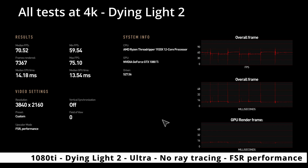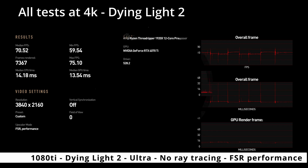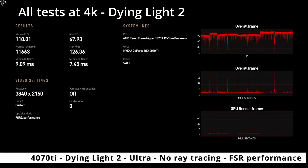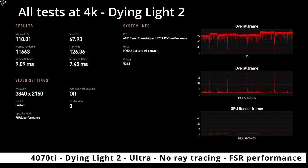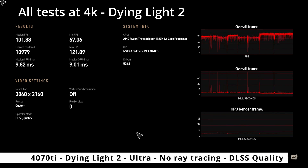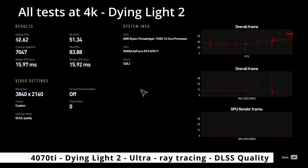4070 Ultra, no Ray Tracing, FSR Performance: 110 and 67 for lows. Moving on, we got DLSS Quality Mode — which I've chucked in because DLSS obviously doesn't run on the 1080 — we got 101 and 67. And then with Ray Tracing, DLSS Quality Mode, we've got 62 and 51.